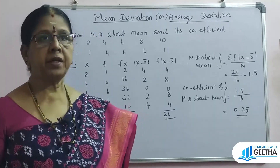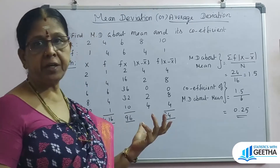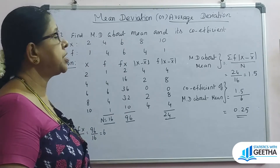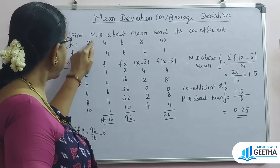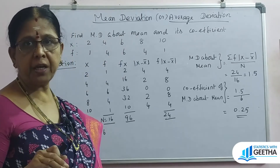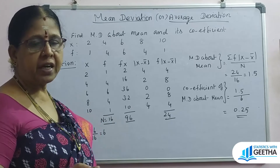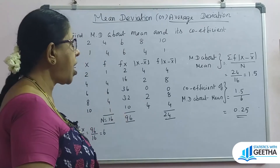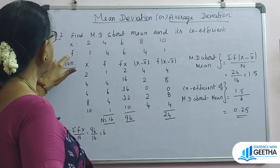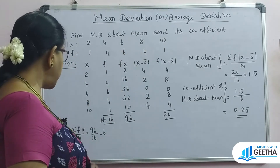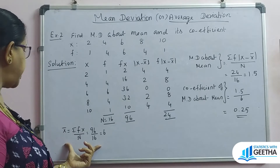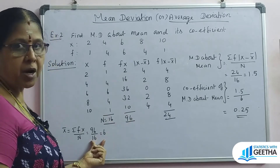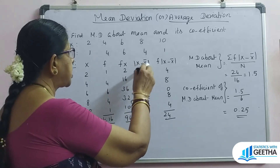Now for problem 2, we consider the discrete series. We find mean deviation about mean and its coefficient. For discrete distribution, x-bar equals summation of fx divided by n. The deviation is mod(x minus x-bar). Taking the modulus of x values about x-bar equals 6.